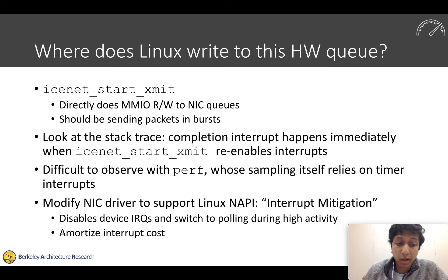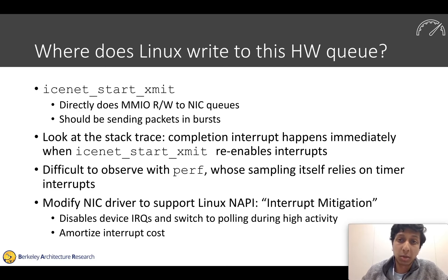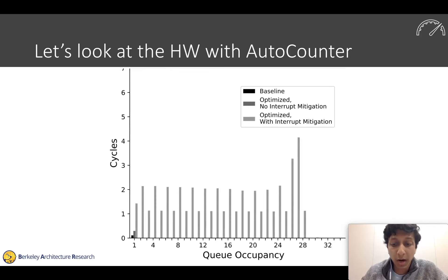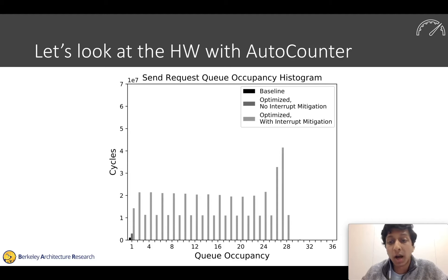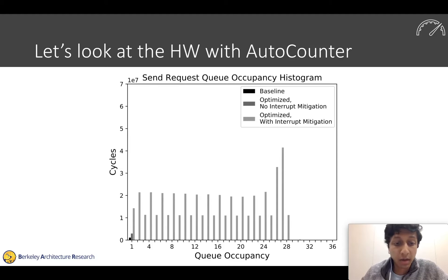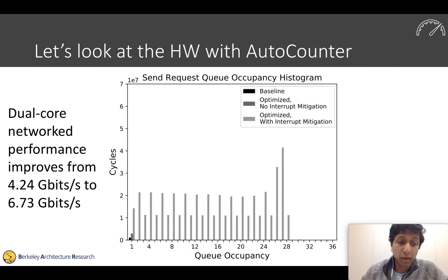To resolve this performance pathology, we modify the NIC driver to support Linux's NAPI driver design, which allows us to implement interrupt mitigation. We adaptively disable device IRQs and switch to polling under high load, amortizing interrupt costs over many interrupts. Once we do this, we see much better queue occupancy — queue occupancies can rise as high as the 30s, indicating the queue is actually filling up with large batches of packets. Our actual performance improves up to 6.7 gigabits per second.